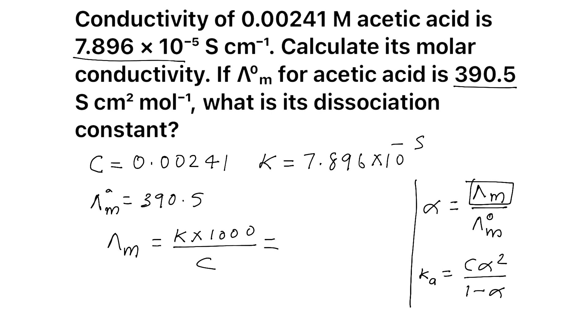Substitute and find answer. So, 7.896 into 10 raised to minus 5 into 1000 by concentration is what? 0.00241. On calculating, you will be getting like 32.76. Now, what we have to find? Of course, you got lambda M.